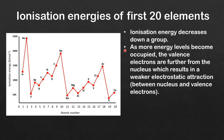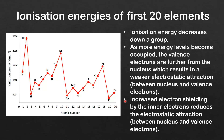The general trend is that ionization energy decreases down a group. As more energy levels become occupied, the valence electrons are further from the nucleus, resulting in a weaker electrostatic attraction. The second reason is that increased electron shielding by the inner electrons reduces the electrostatic attraction between the nucleus and the valence electrons.